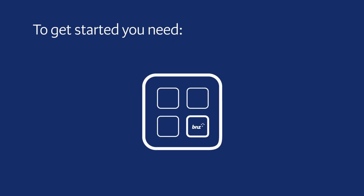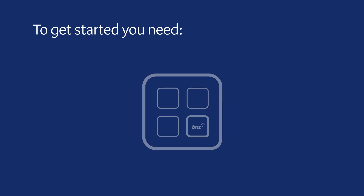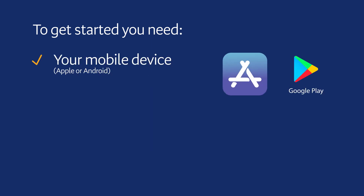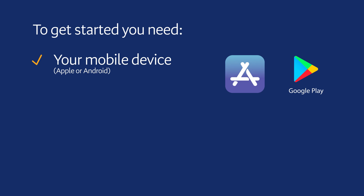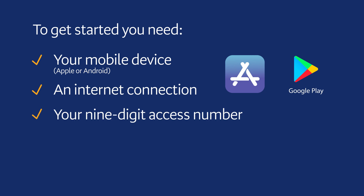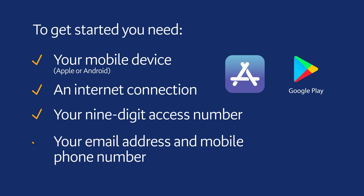Once you're set up with Internet Banking, you're nearly ready to use the BNZ app. You'll need your mobile device, which has either Apple or Android software. Make sure your device is connected to the internet or has data. You'll also need your nine-digit access number found on the back of your BNZ EFTPOS, debit or credit card, and access to your email account and mobile number on file with BNZ.